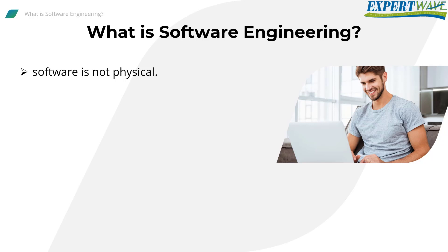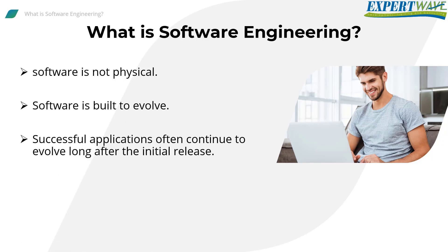Software engineering includes more flexibility than many other fields of engineering, which increases challenges. Software is built to evolve — actually, successful applications often continue to evolve long after the initial release. Microsoft Word, for example, has been evolving for roughly 30 years. We want such evolvement to be as effective and efficient as possible: effective means we want to achieve our goal, and efficient means we want it to happen smoothly with minimum effort, minimum cost, and time.